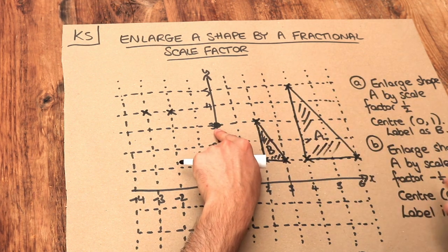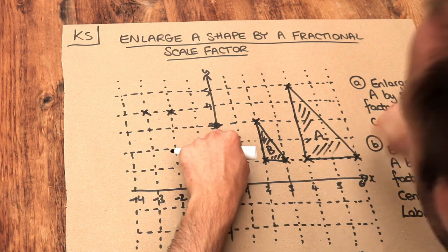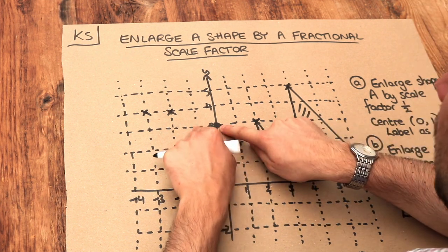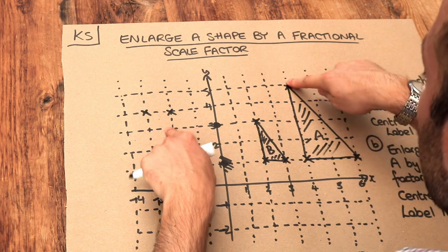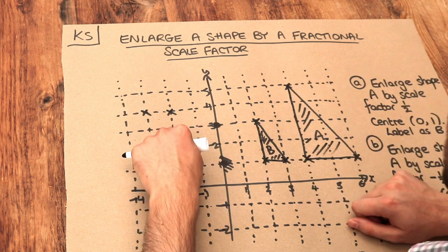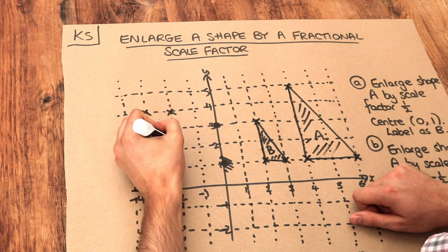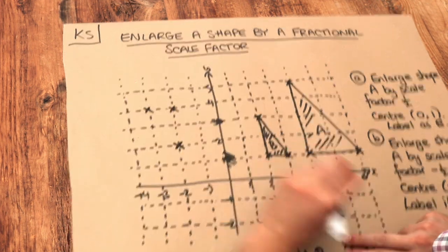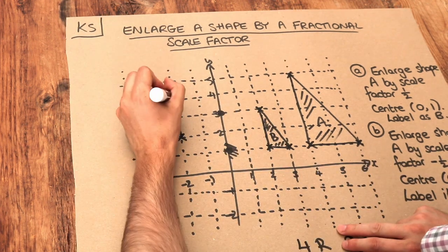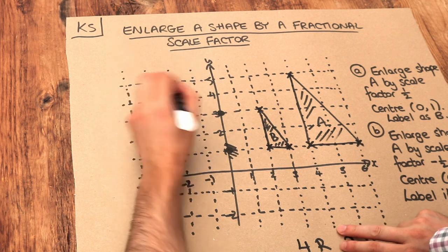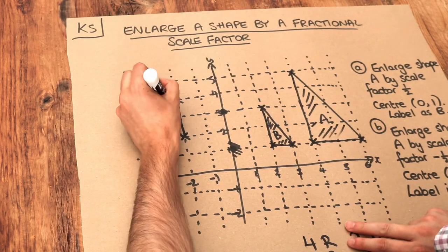The 4 right, if we halve it and negate it, becomes 2 left, and the 2 up becomes 1 down because half of 2 is 1 in the opposite direction. Joining those up, we get this shape. I'll label it C to complete the question.